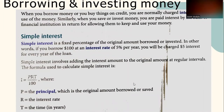When you borrow money or buy things on credit, you are normally charged interest for the use of the money. Similarly, when you save or invest money, you are paid interest by the bank or financial institution in return for allowing them to keep and use your money. Simple interest is a fixed percentage of the original amount borrowed or invested.